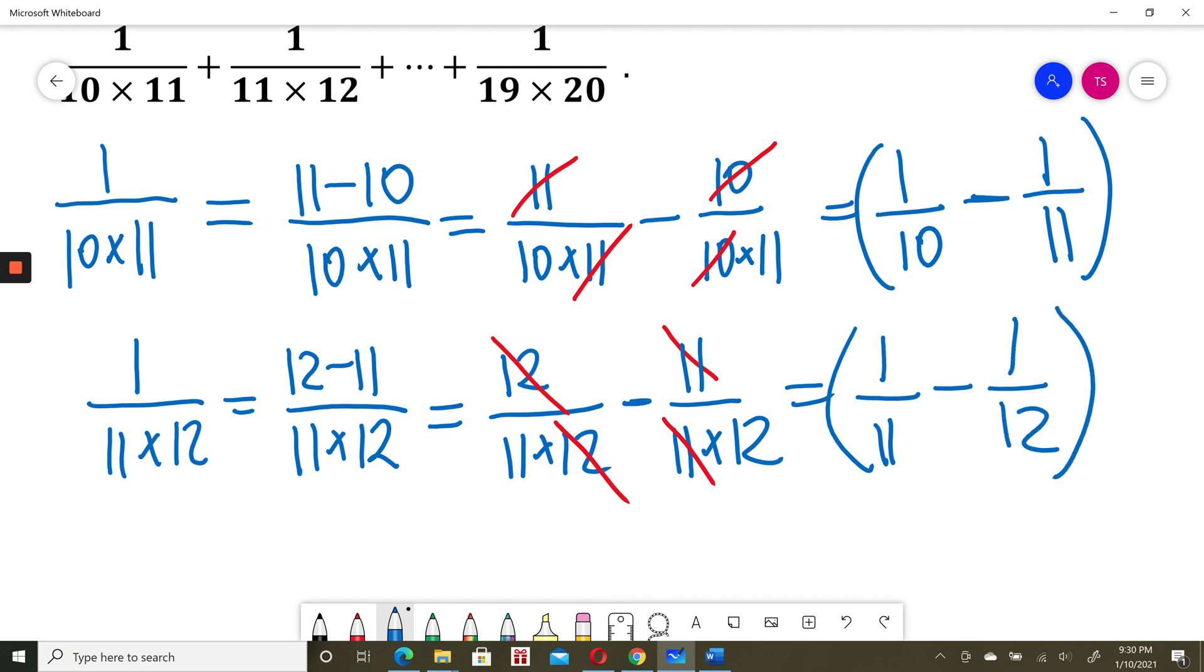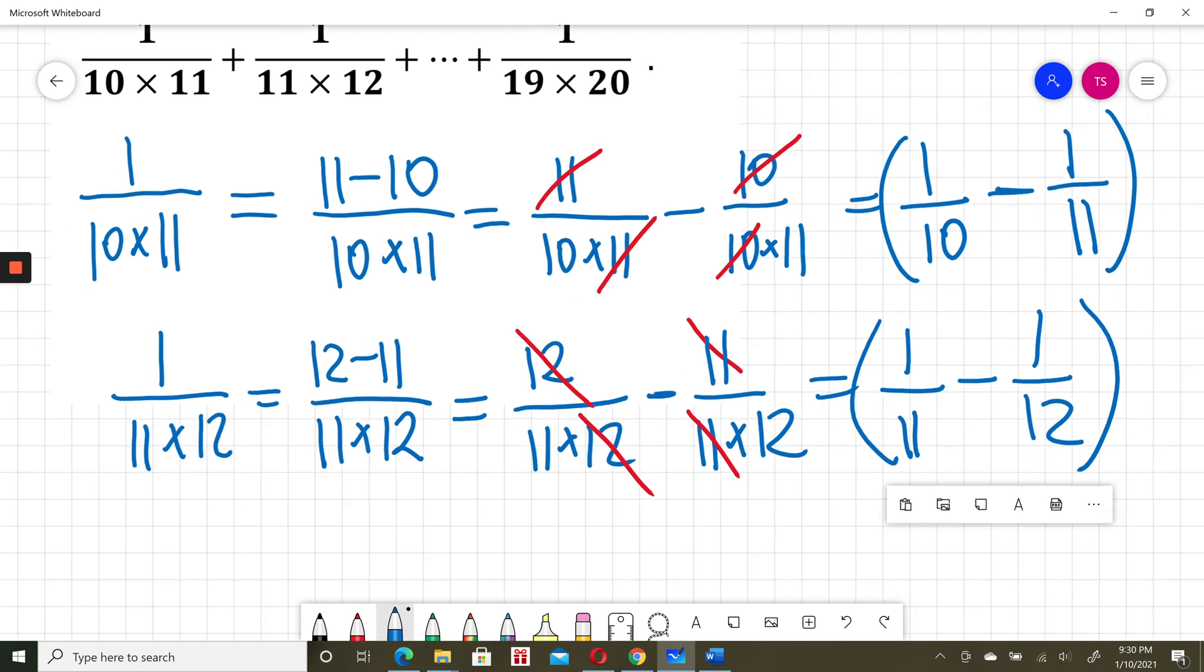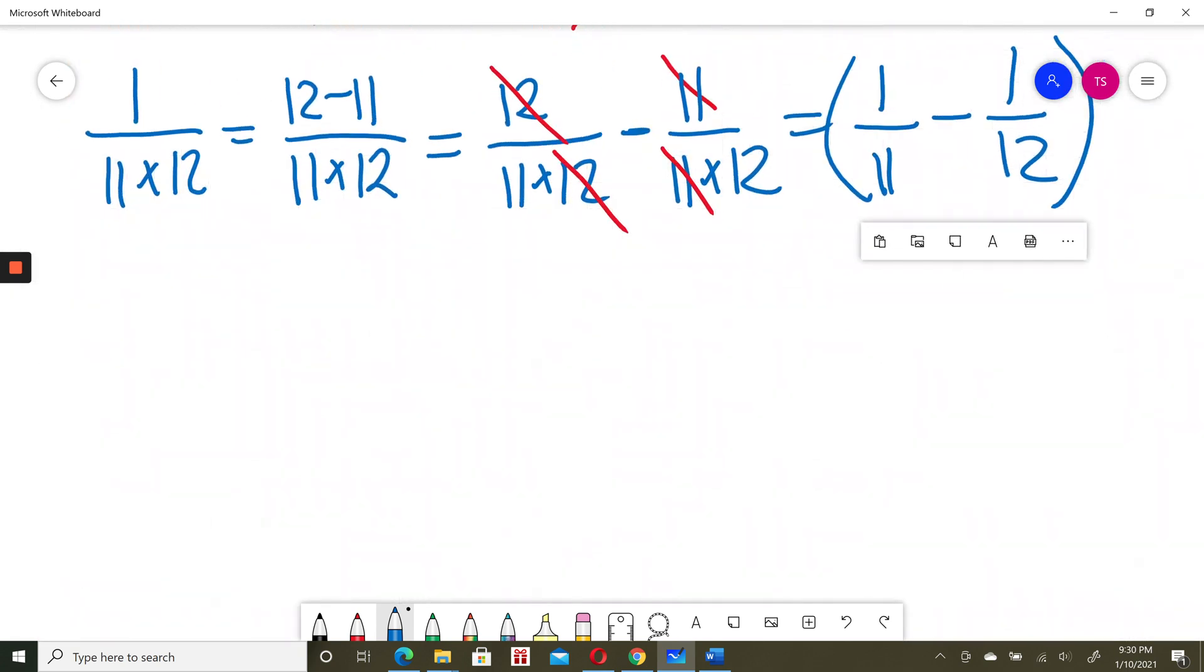Now I will consider the last part. So continuing the same way, I'll just do 1 over 19 times 20. 1 I can write as, similarly, 20 minus 19.